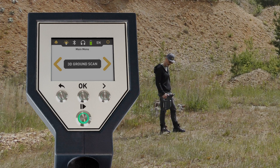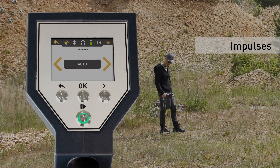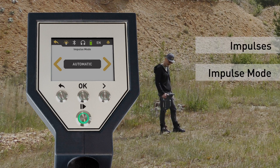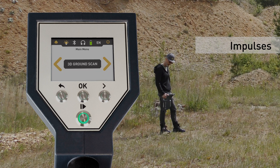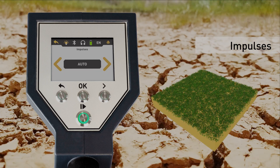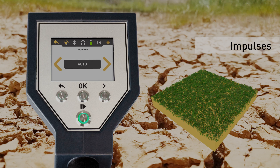Select 3D Ground Scan and adjust the initial parameters: impulses, impulse mode, scan mode, and transfer mode. Set the number of impulses — these are the scan values that will be recorded line by line. We recommend selecting Auto. In this mode, the number of impulses of one scan line will be defined in the first scan line.